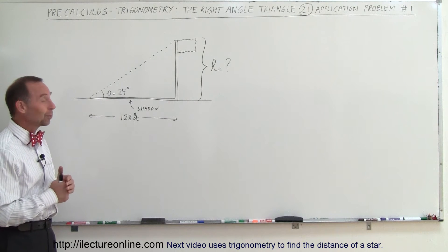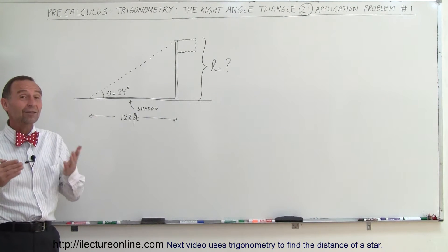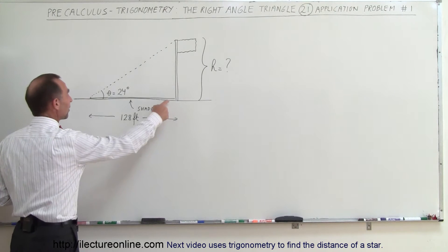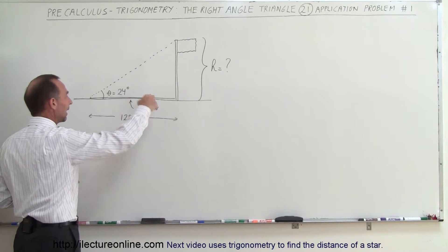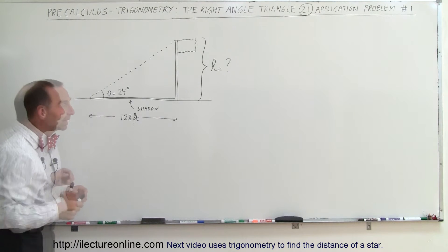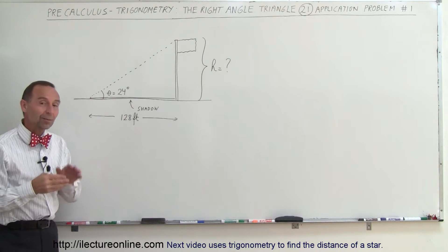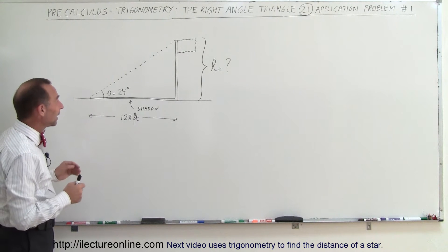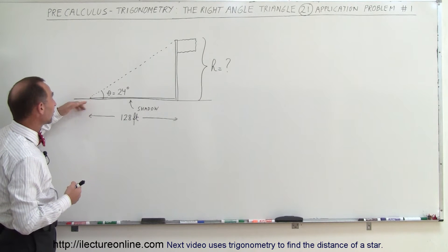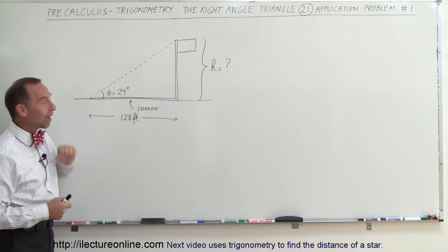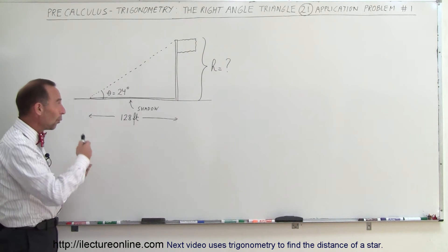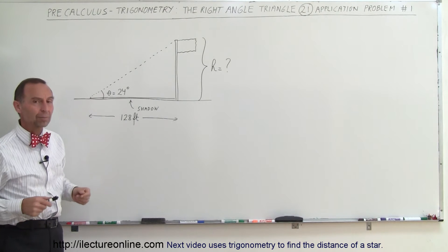Let's say we have a flagpole and we're wondering how high the flagpole is. We notice that it casts a shadow due to the sun shining down. The shadow is 128 feet long. Then we pull out a little protractor and we check the angle, and we notice the angle is 24 degrees from the ground, from the tip of the shadow to the top of the flagpole. From that, we should be able to figure out what the height of the flagpole is.